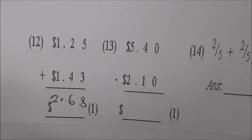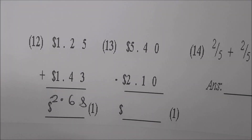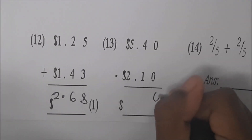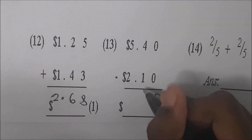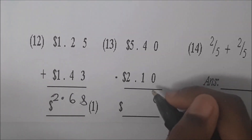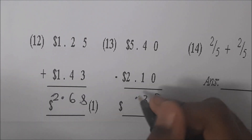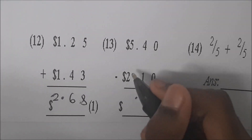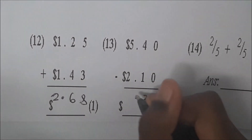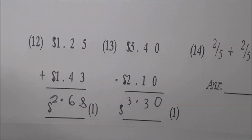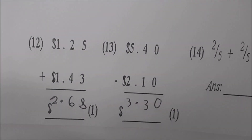Go to number thirteen. It's five dollars and forty cents take away two dollars and ten cents. Subtract. Zero take away zero. Four take away one is three. Five take away two is three. So the answer is three dollars and thirty cents. Very good.